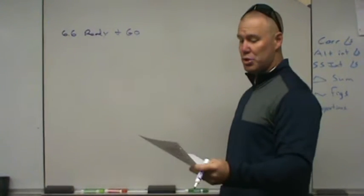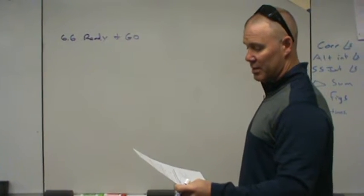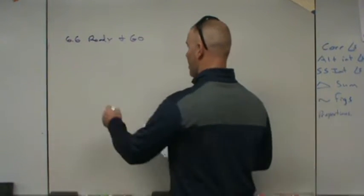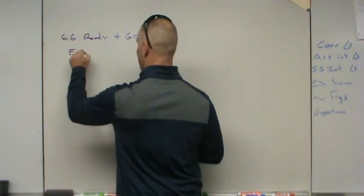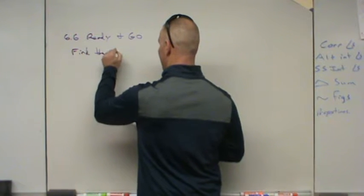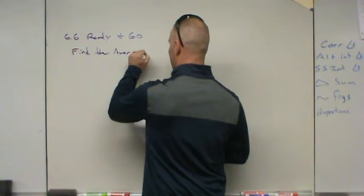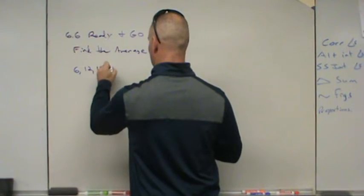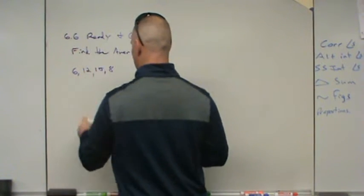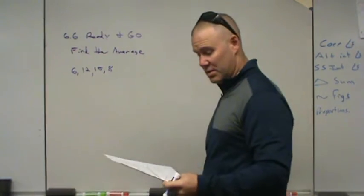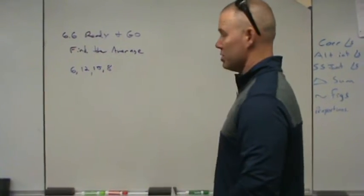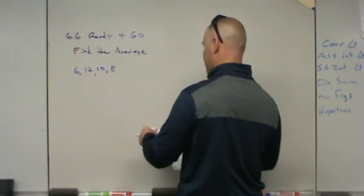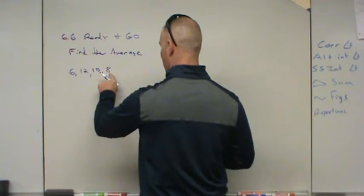For each set of numbers, find the mean or average. I care most about finding the average. How do you find the average of a set of numbers? For example: 6, 12, 10, and 8 — you scored a 6, 10, 12, and 8 on four quizzes. What is your average score? We add up all of the numbers.